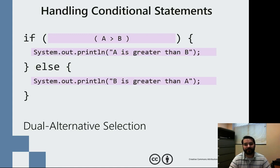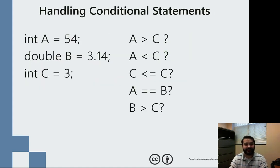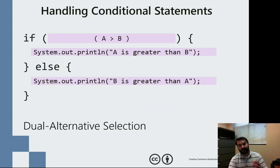And we could see that a little even further. If we go way back to our code here. A, B, and C. A is 54, B is 3.14, C is 3. If we look at that, if A greater than B, if 54 greater than 3.14, then do a system.out.println A is greater than B, else B is greater than A.